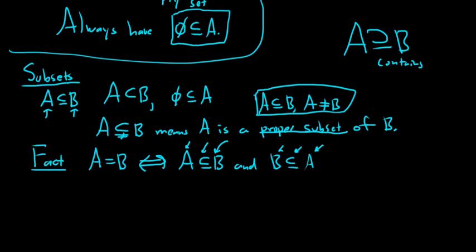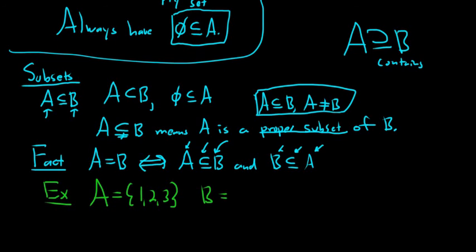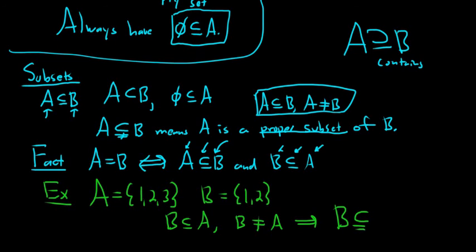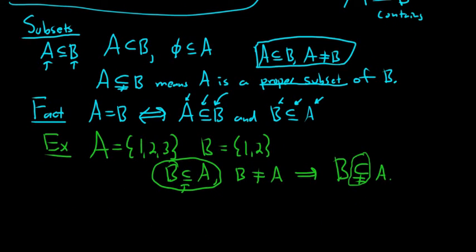Let's look at an example. Say A = {1, 2, 3} and B = {1, 2}. Every element of B is also in A, so B is a subset of A. Notice B is not equal to A since they don't have the same elements, so B is a proper subset of A. In practice, just saying B is a subset of A is good enough unless there's a specific reason to mention it's proper.